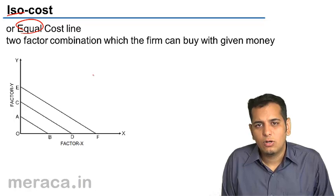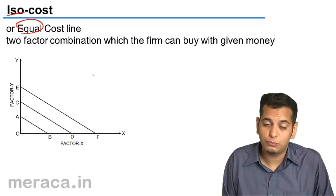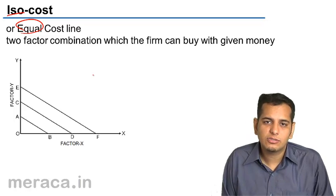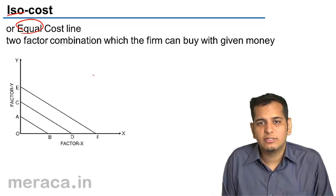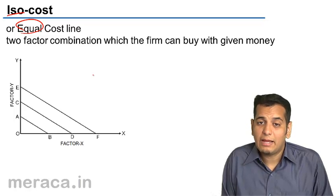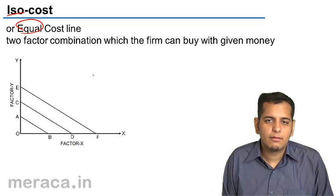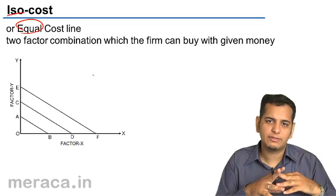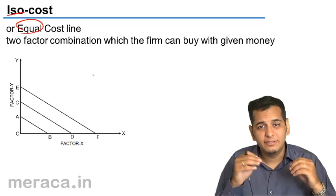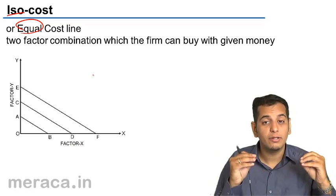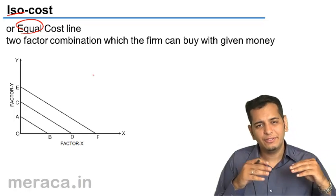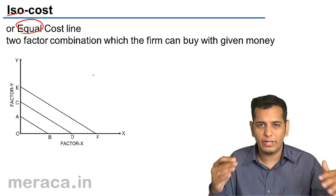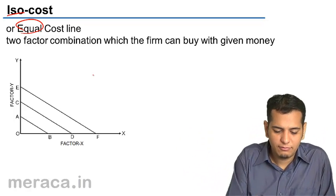But do all the inputs come at the same cost? No. It might be possible that land might be costlier than capital, or labor might be costlier than land, or capital might be costlier than labor. So the cost of all the factors of production is not the same. Thus, when we change the combination of factors of production, our cost also changes. ISO cost line represents the level of expenditure or cost we need to incur by employing different combinations of factors of production.